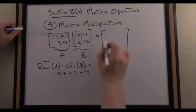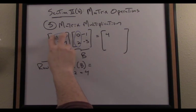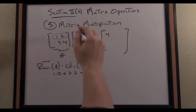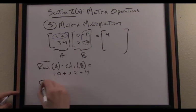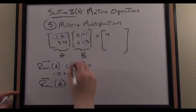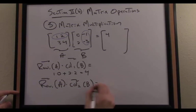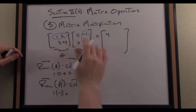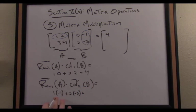Moving on, I take the first row still of the matrix on the left and now I'm going to dot that with the second column of the matrix on the right. In other words, I take row 1 of A as a vector and I dot it with column 2 of B also a vector. The result of that dot product is 1 times negative 1 plus 2 times negative 3. I have negative 1 minus 6 is negative 7, so I place negative 7 here.